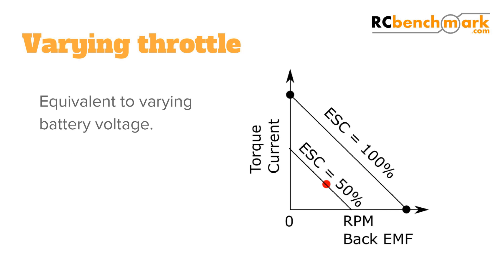For a brushless motor, changing the electronic speed control input is similar to changing the voltage. When reducing the ESC input, the line of operation stays parallel to the original line. The no-load point and the stall torque point will move if we change the throttle. For an ideal ESC, changing the throttle will be equivalent to changing the battery voltage.